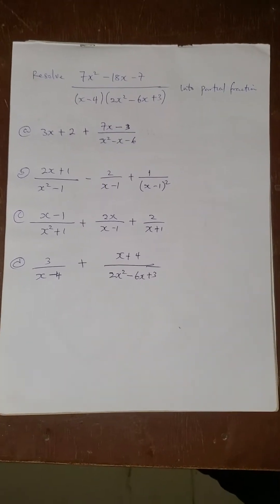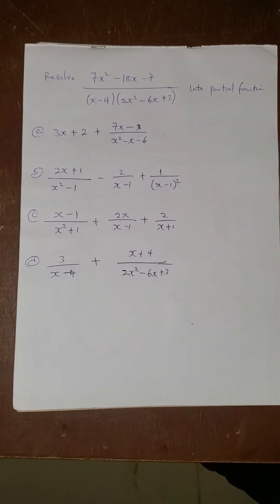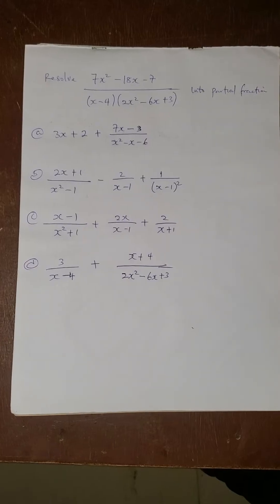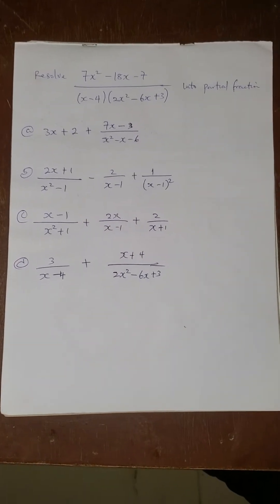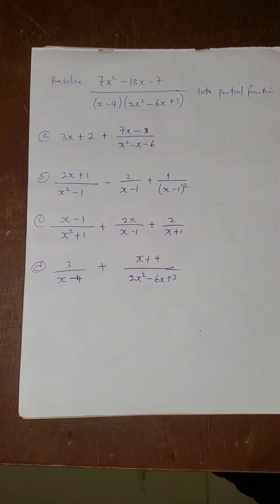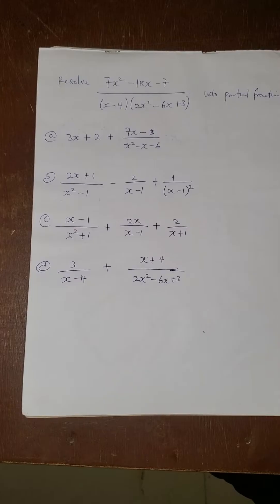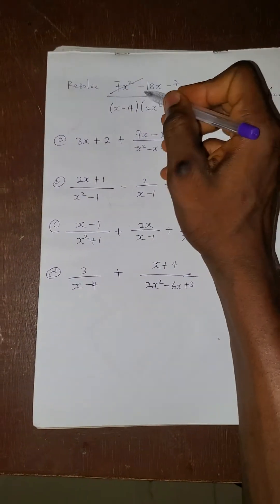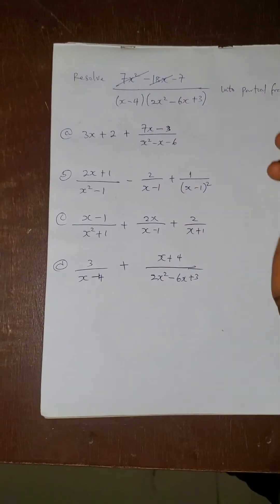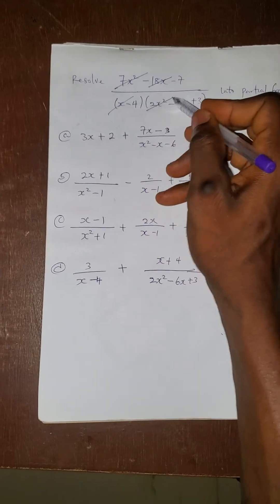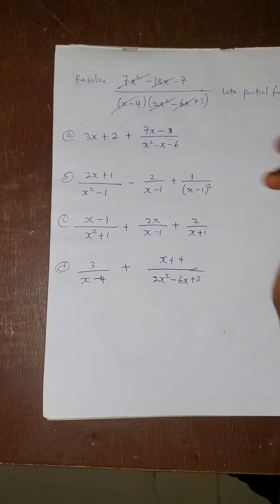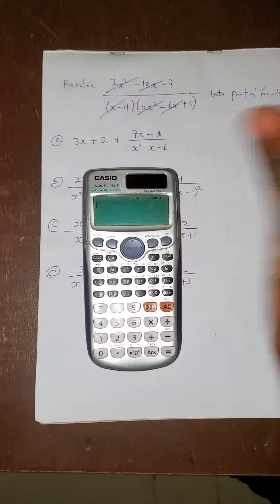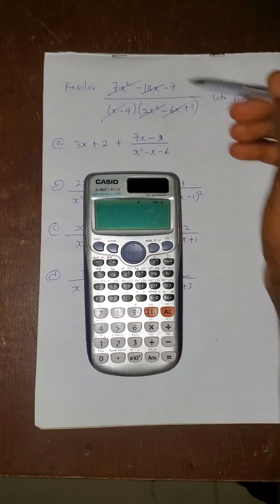If you are dealing with an objective question like this, I will just cancel anywhere I see x, or any numbers attached with x. I will cancel this, I will cancel this, I will cancel this, I will cancel this. So I will not deal with the numbers that remain in that equation.